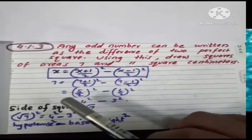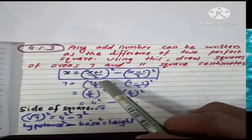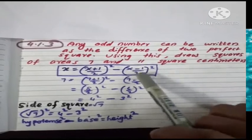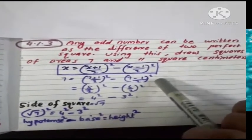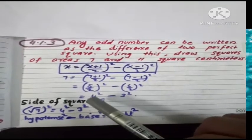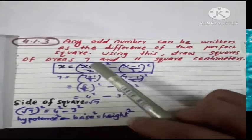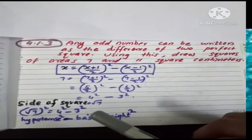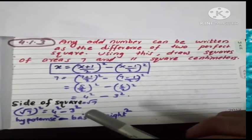The equation is x equals x plus 1 by 2 whole square minus x minus 1 by 2 whole square. We will see 7. We need 2 more square, then we have 4, 4 square equal to 1.